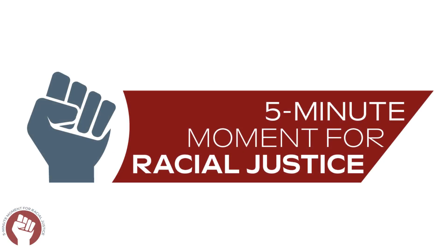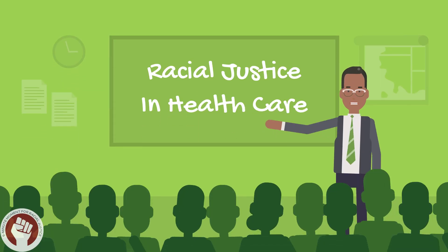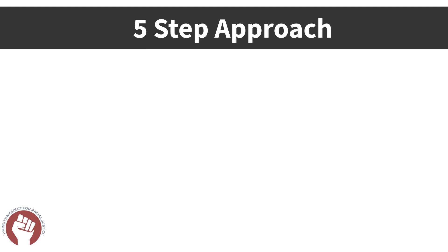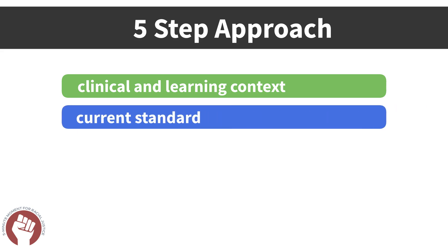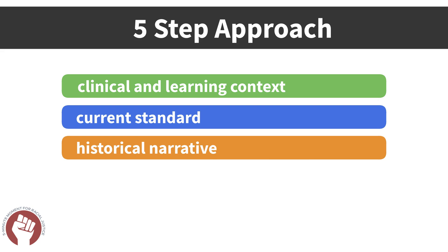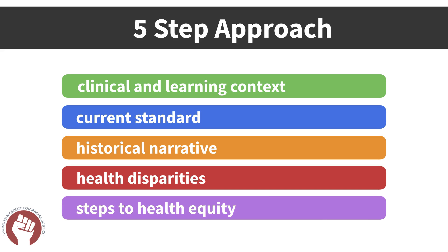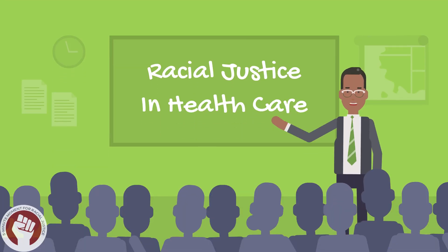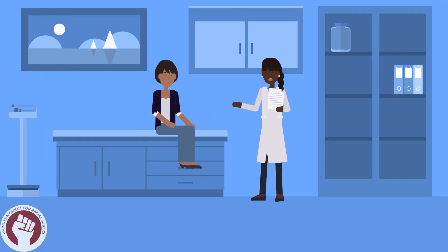The 5-Minute Moment for Racial Justice is a teaching framework to promote health equity and racial justice in medical education. The framework relies on a 5-step approach that discusses the clinical and learning context, the current standard of a medical diagnostic or treatment, the historical roots and bias of that standard, contributions to health disparities, and steps to take to promote health equity. This framework offers educators a structured way to talk about this topic in a concise manner across commonly encountered clinical scenarios.